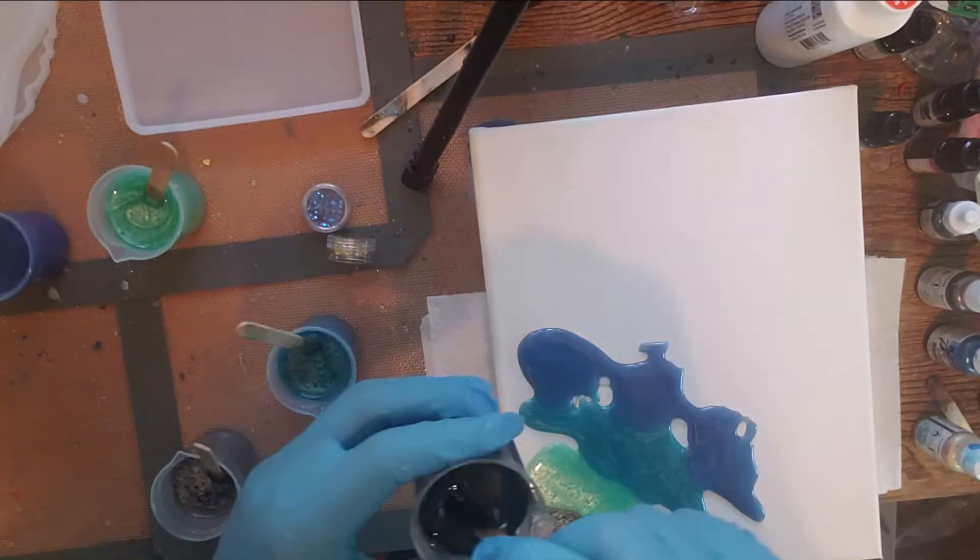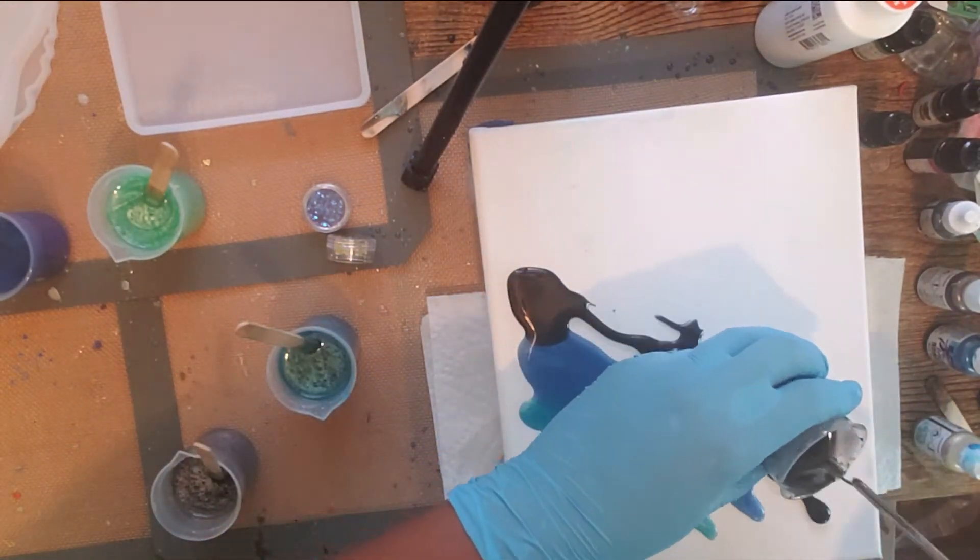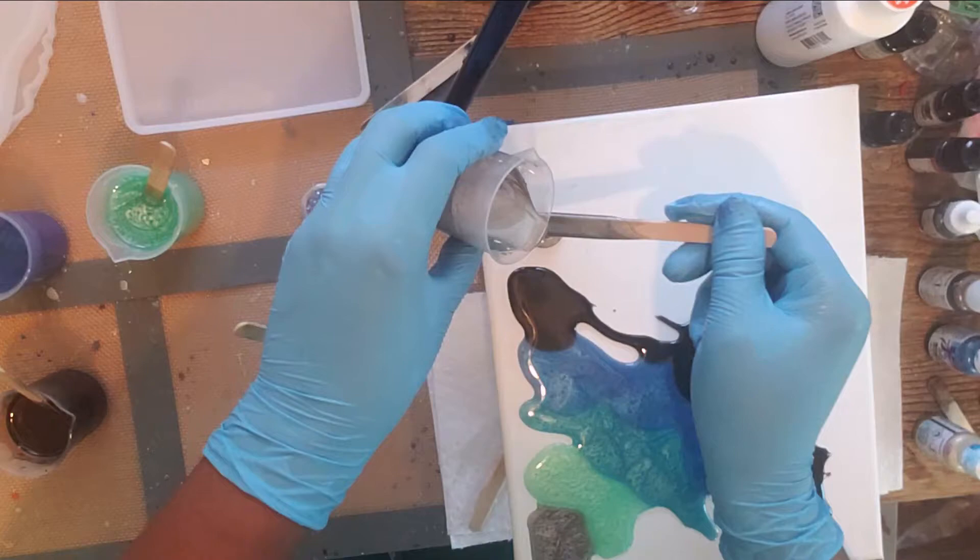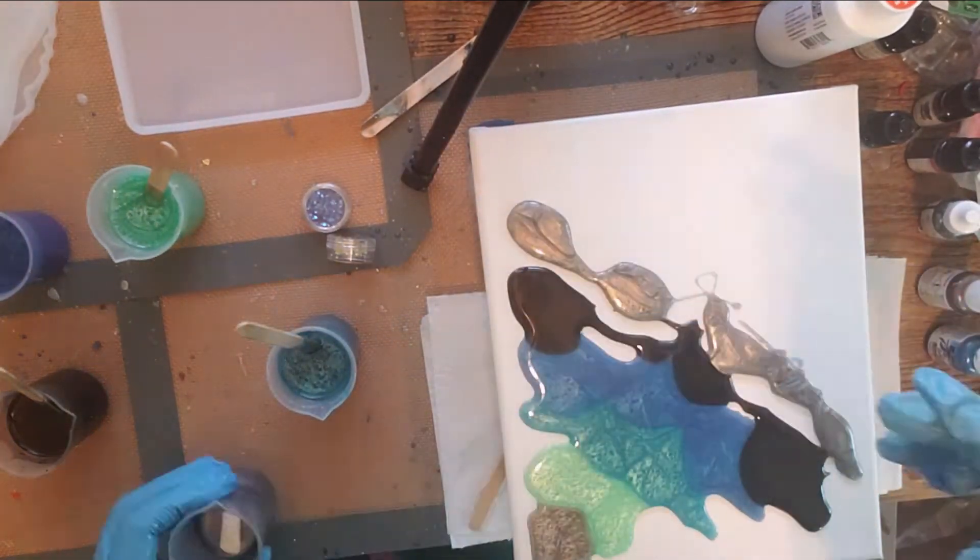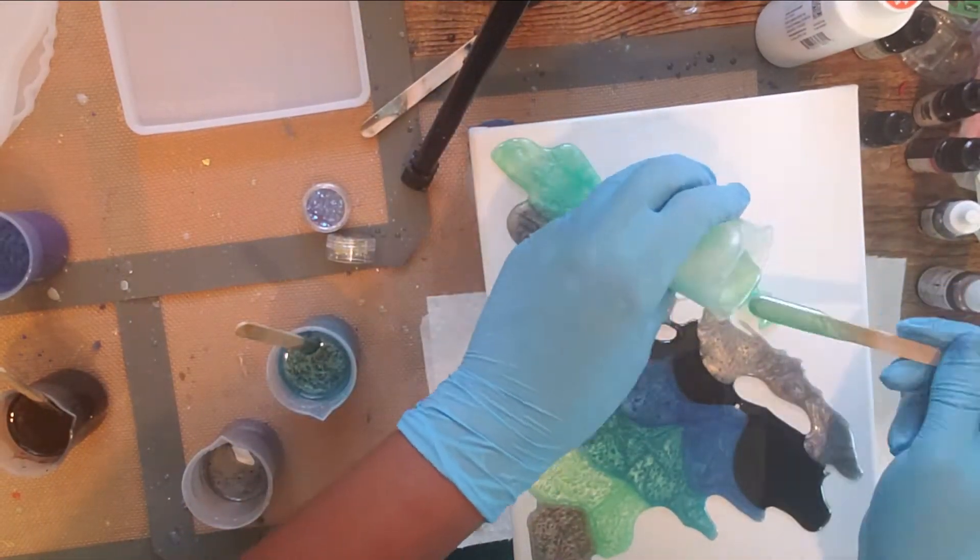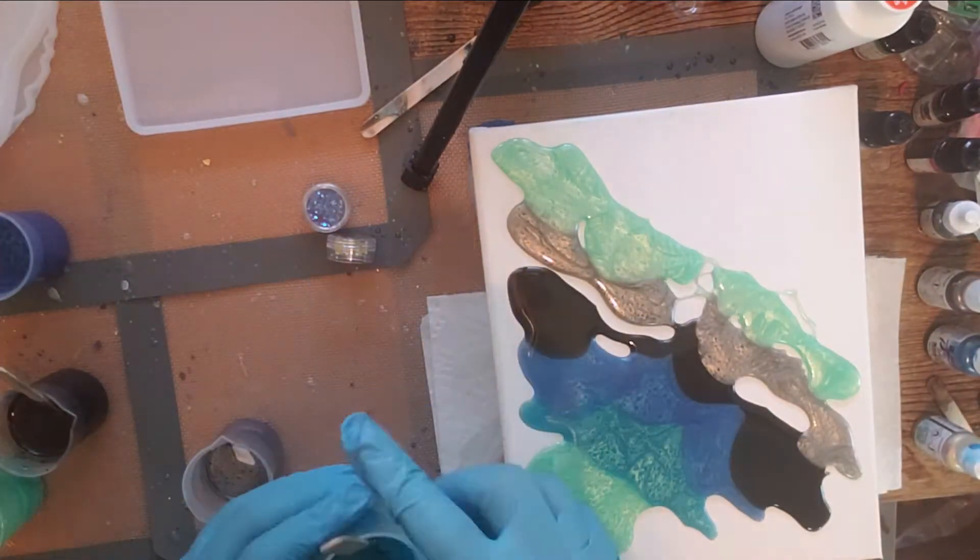I should really do the videos closer to when I make the pieces. Anyway, I'm pretty sure I used mica powders for all the colors, hence why they kind of have that shimmery, opaque look.